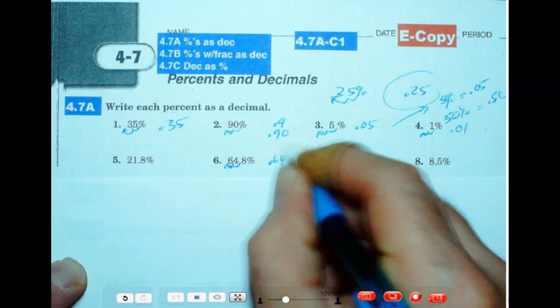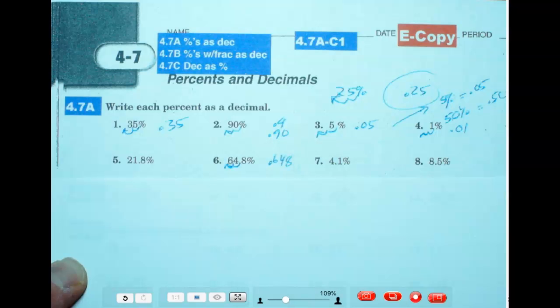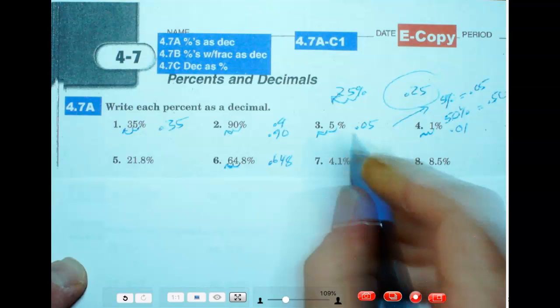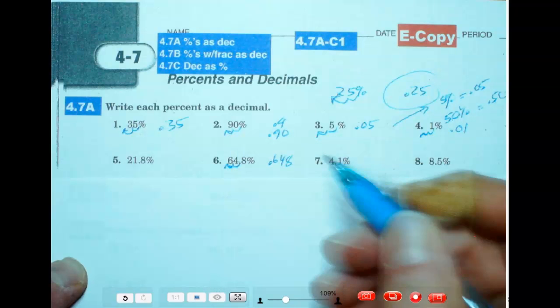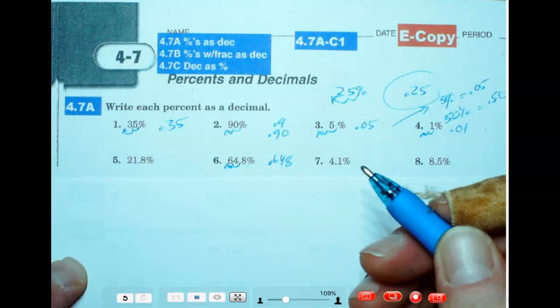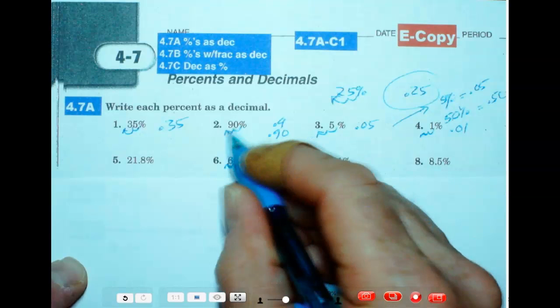0.648. Now, on one that's like 90 percent, where there is no decimal, you go to the end, you take away the percent sign and put the decimal in, and then move it. That's why I just leave it there like that.